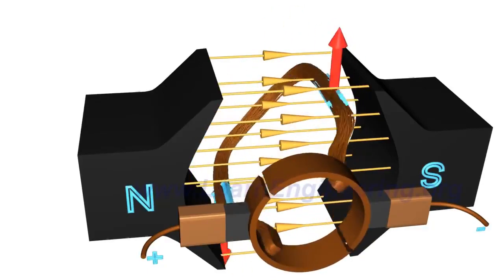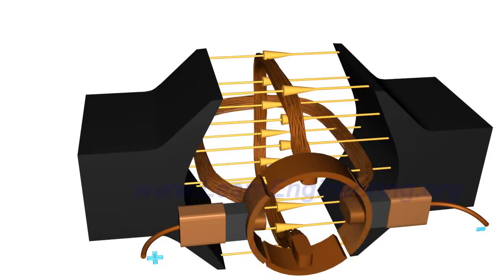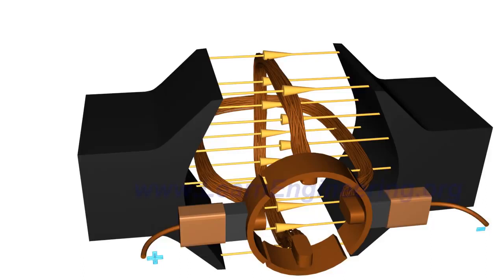Here is the trick to overcoming this problem. Add one more loop to the rotor, with a separate commutator pair for it. In this arrangement, when the first loop is in the vertical position, the second loop will be connected to the power source, so a motive force is always present in the system.